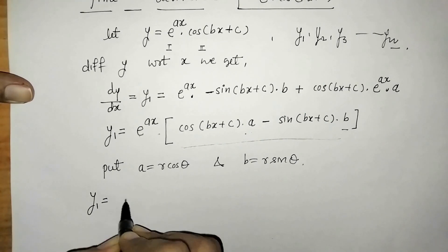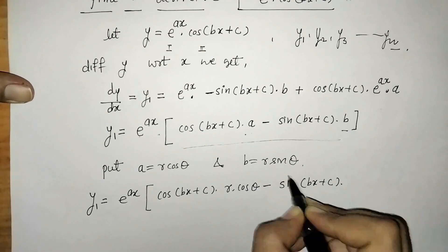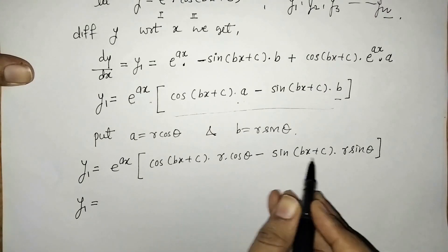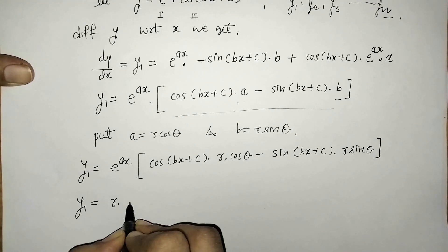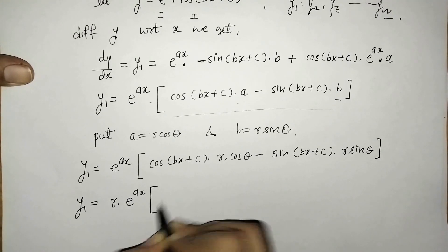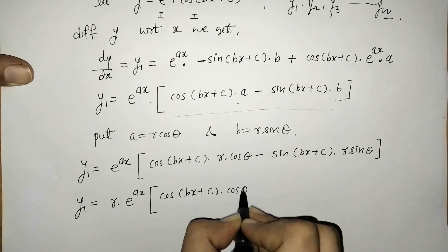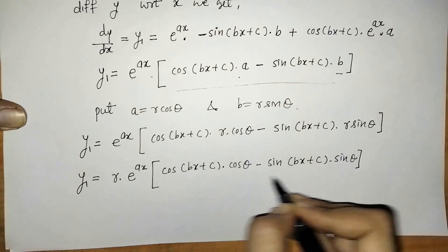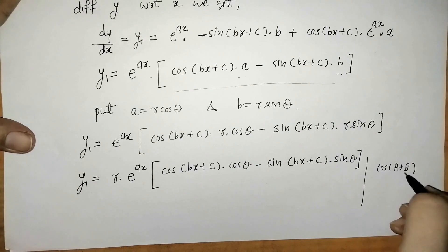We apply the substitution: a equals r cos theta and b equals r sin theta. Using this substitution, here we have r common, so we take it outside the bracket. Remaining expression inside looks like cos of a plus b.